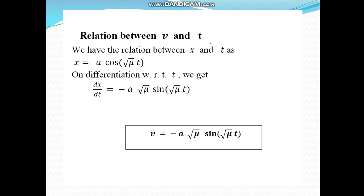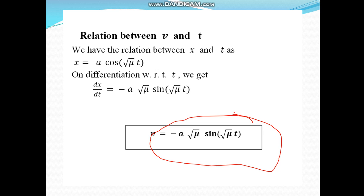Now for the relation between v and t: we have x = A·cos(√μ · t). Differentiating with respect to t, we get dx/dt = −A√μ · sin(√μ · t). Since v = dx/dt, the relation between velocity and time is v = −A√μ · sin(√μ · t).